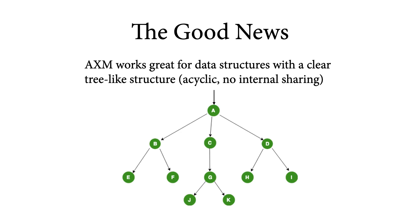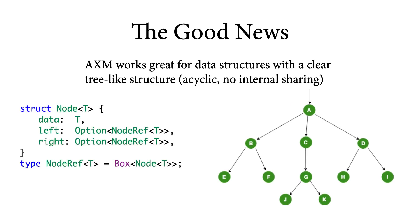Rust's AXM discipline works great for data structures with a clear tree-like structure, and the reason is simply that trees do not have any internal sharing. Each child of a node owns a completely disjoint subtree from the other children, and that greatly simplifies ownership reasoning. Here's how you might define a tree type in Rust: the node type has a data field of type T, and left and right children, which are optional pointers to nodes. The pointers to nodes are represented by a node ref type, defined to be a box of node T — box being Rust's type of an owned pointer. Because left and right are separate fields of this owned pointer type, they implicitly do not alias.